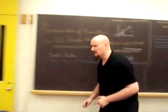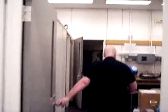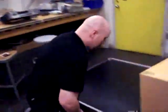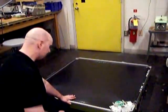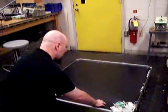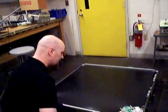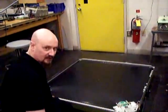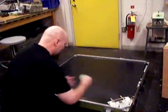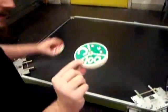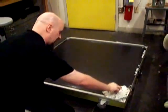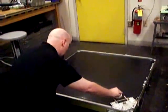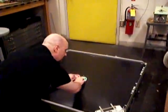Let's go take a closer look at our elastic collision. Normally there is a bed of air coming out of this to provide an essentially frictionless surface. There's a 100 gram puck and a 50 gram puck. They are launched by these two rubber bands, and then they collide and go their separate ways.